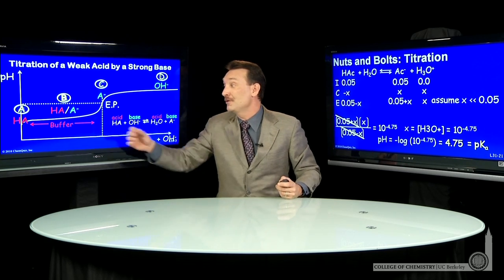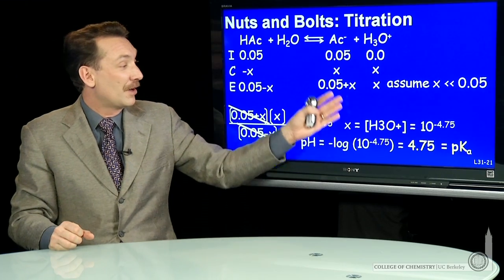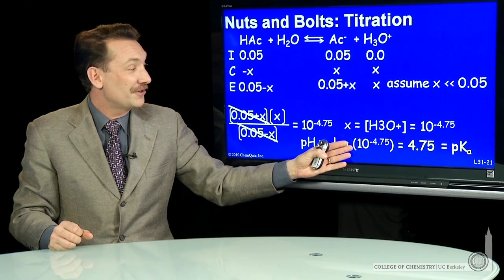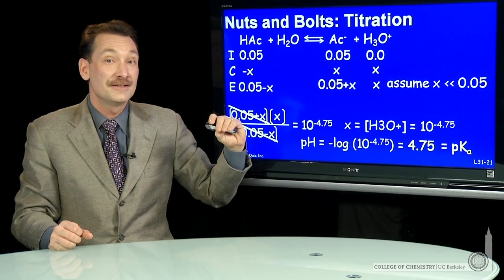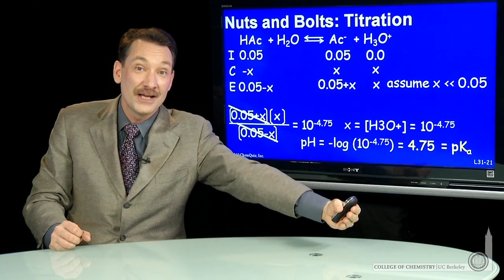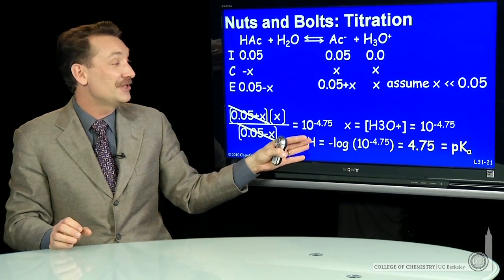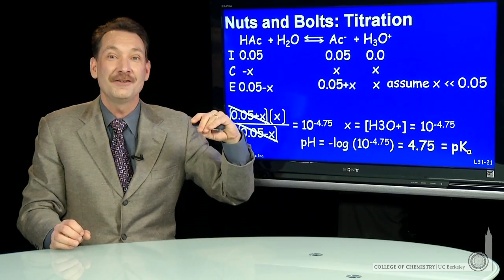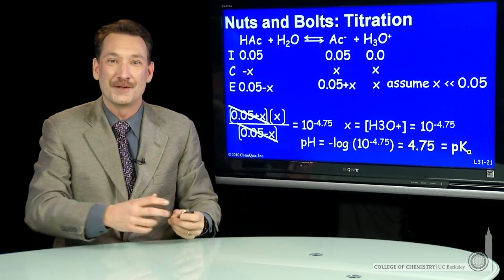So the pH at halfway towards the equivalence point for any weak acid strong base titration, the pH will numerically be equal to the pKa. That's just a feature of titration curves. It's interesting numerical equivalence. So what I have here, after adding some strong base to a weak acid solution, going halfway to the equivalence point, the pH is 4.75, and that's numerically equal to the pKa.